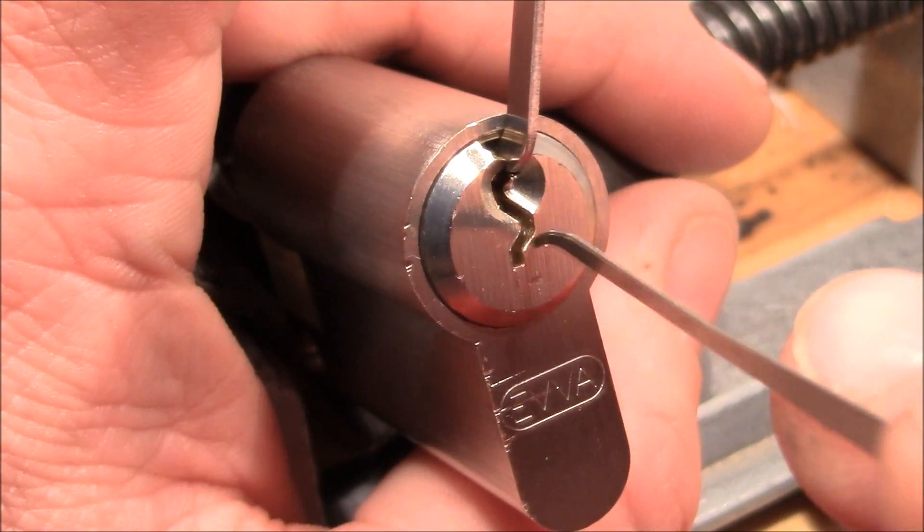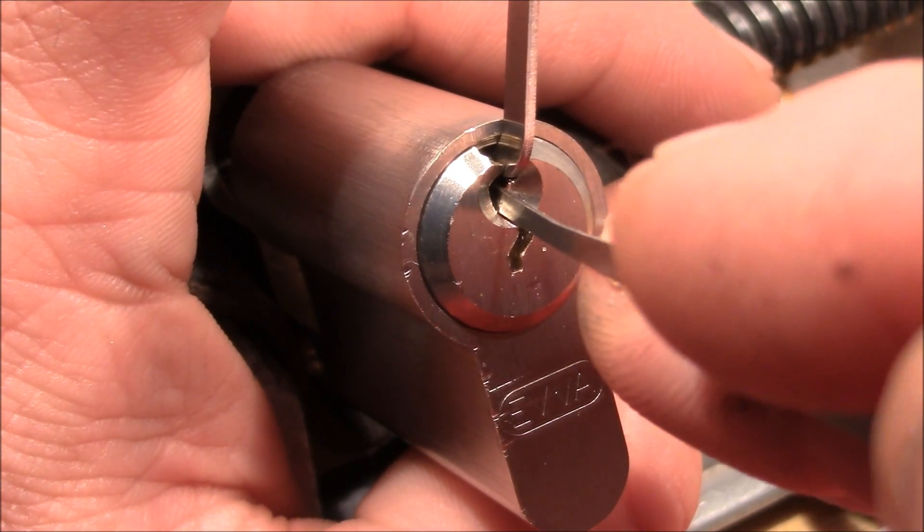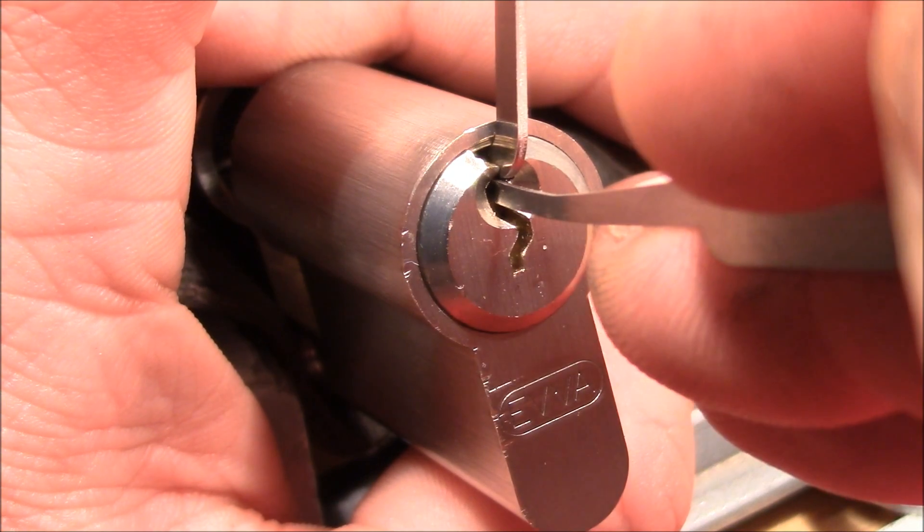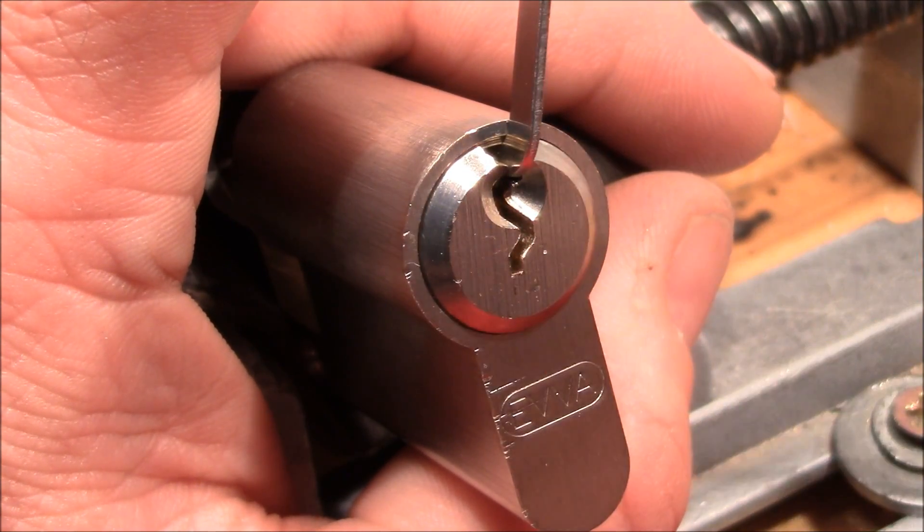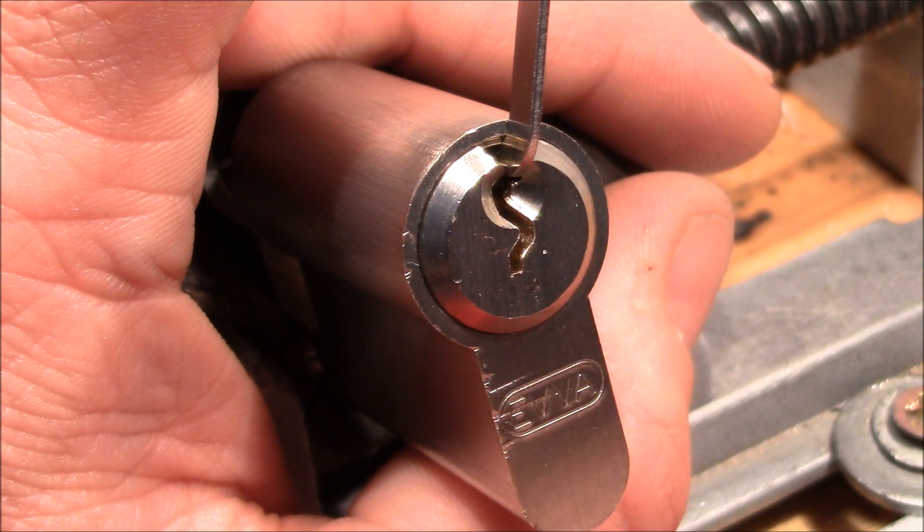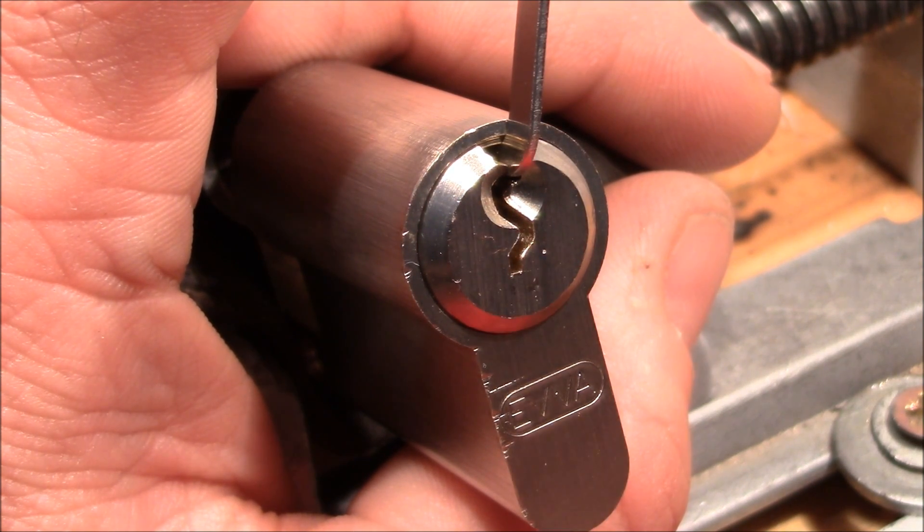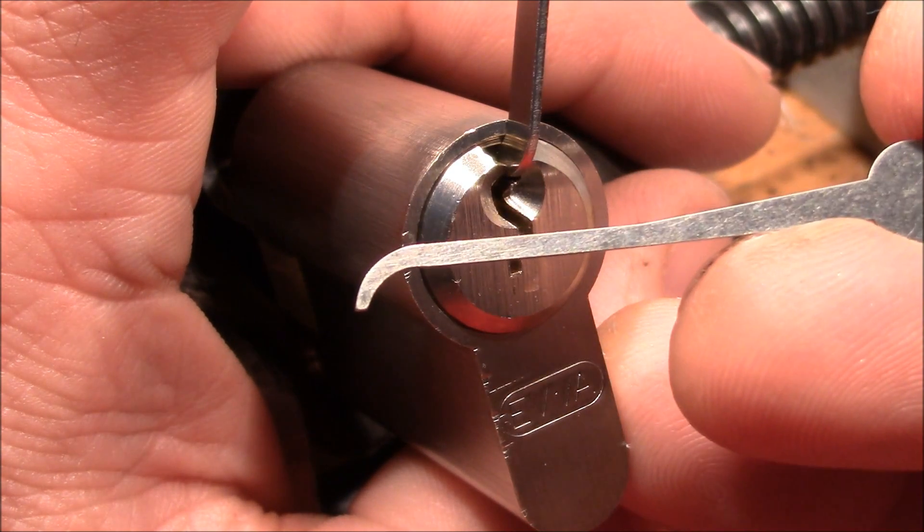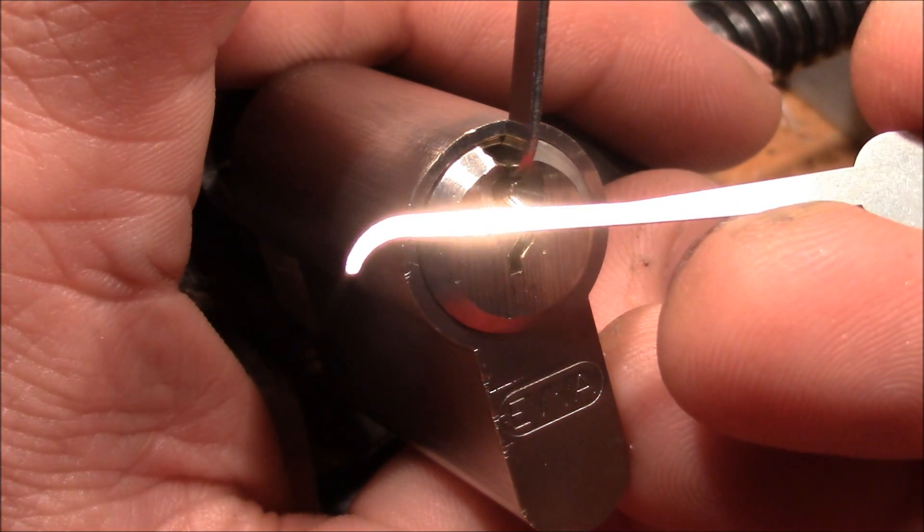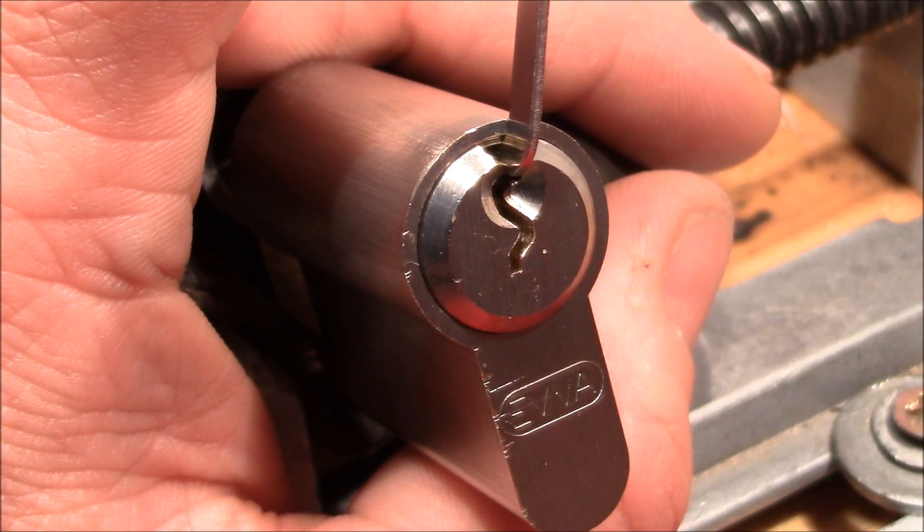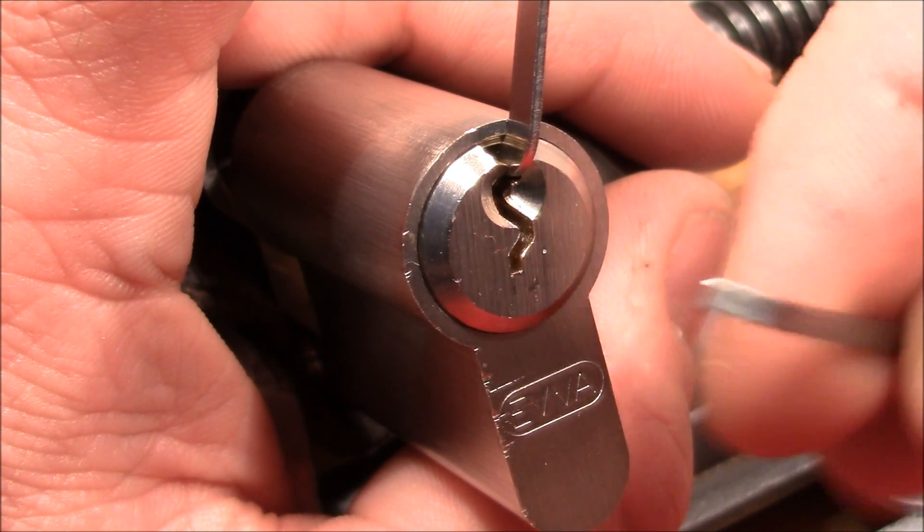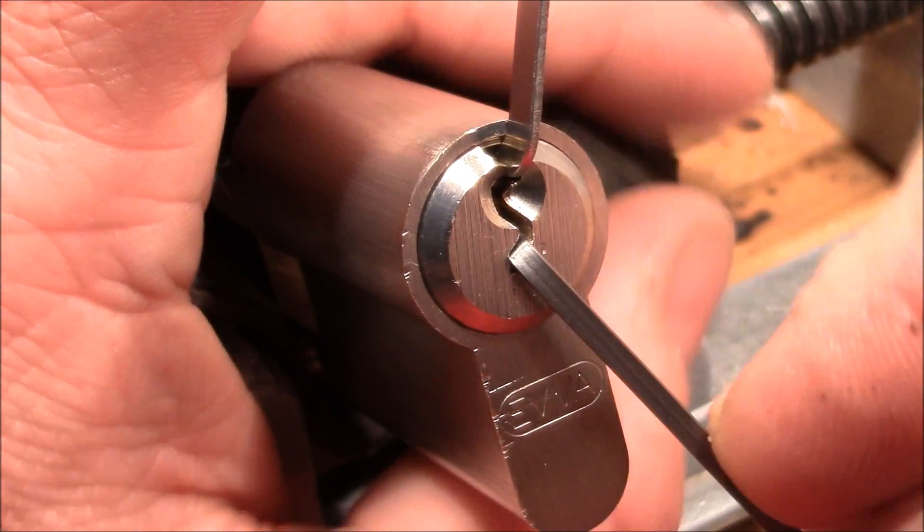And I got a false set. Okay, one spool is set. And touched another pin and dropped into a deeper false set. So now I know from previous picking experience that I need a deeper hook to set the remaining spool. But I don't get it in because the tension wrench is in the way. And there is not enough room. So I changed tension wrenches.